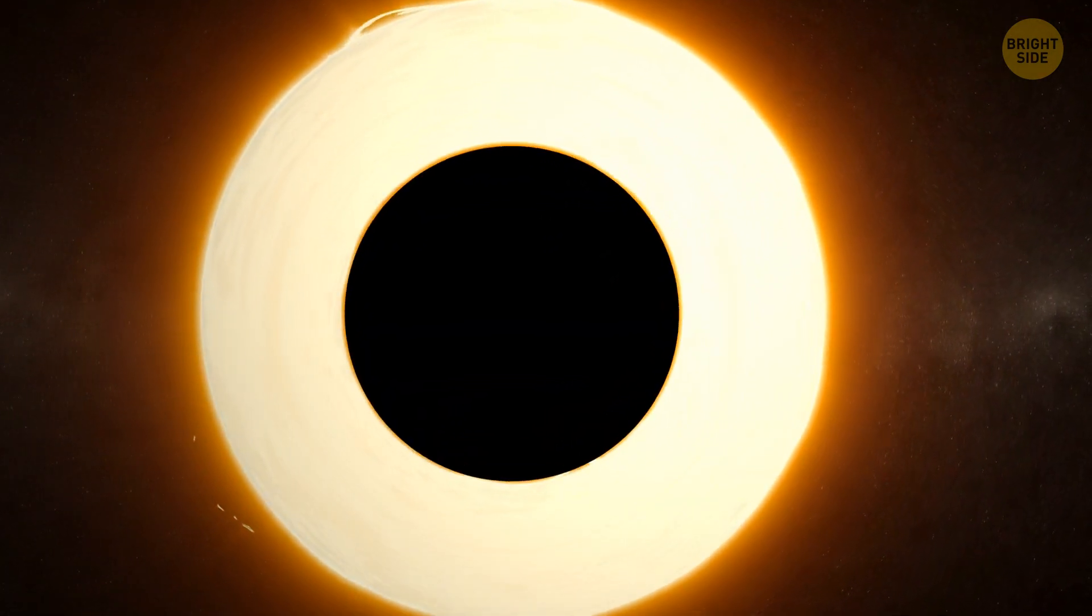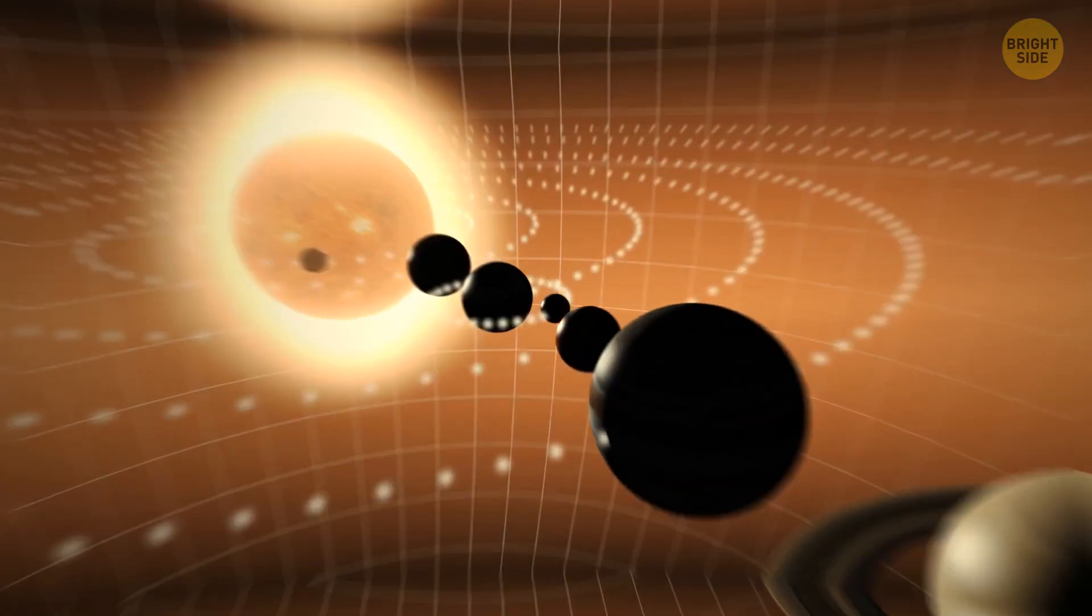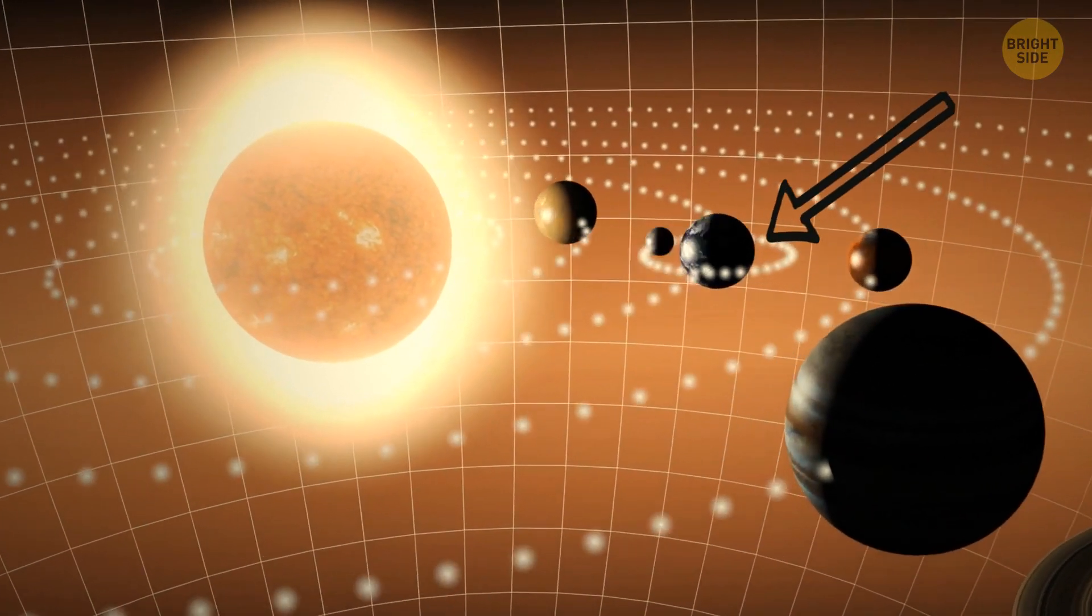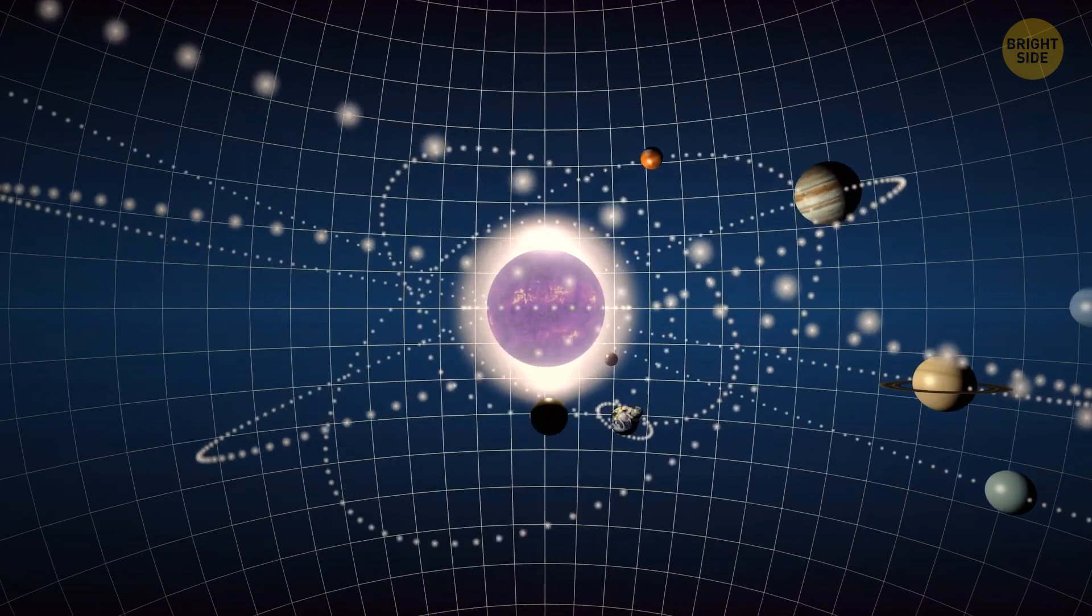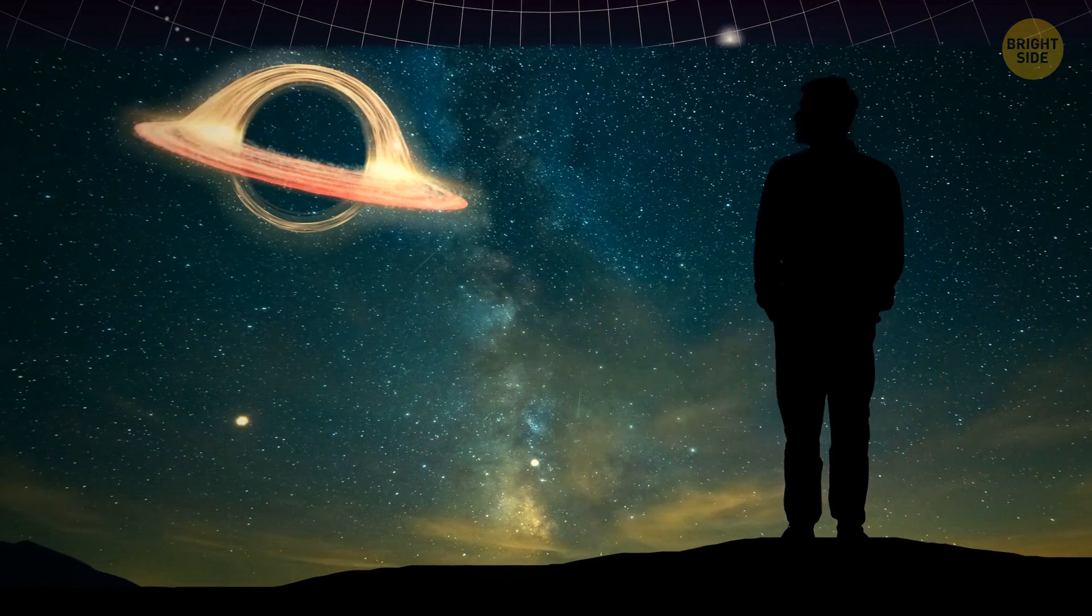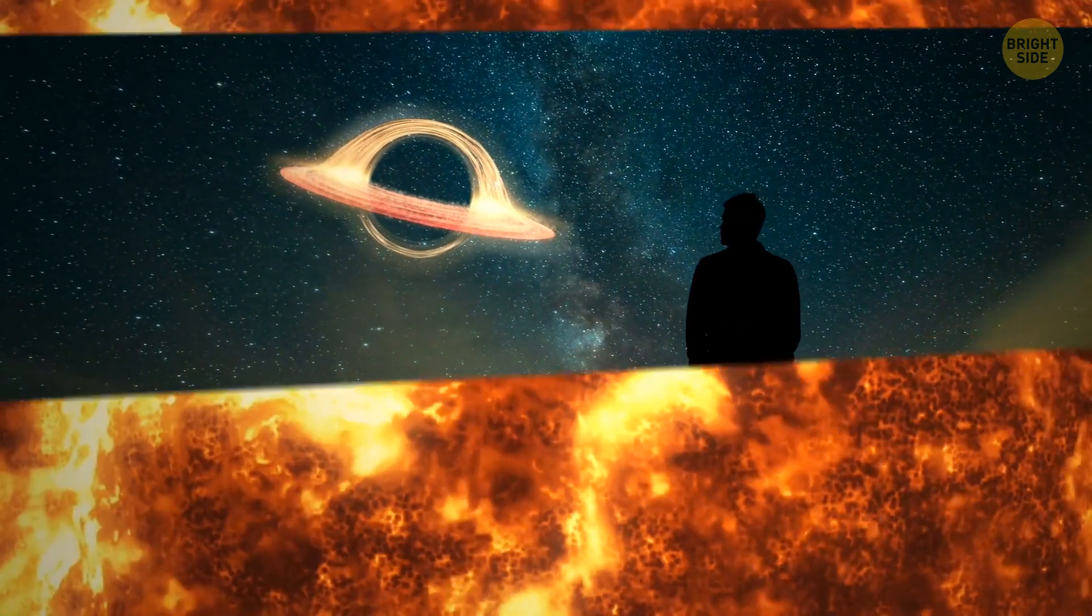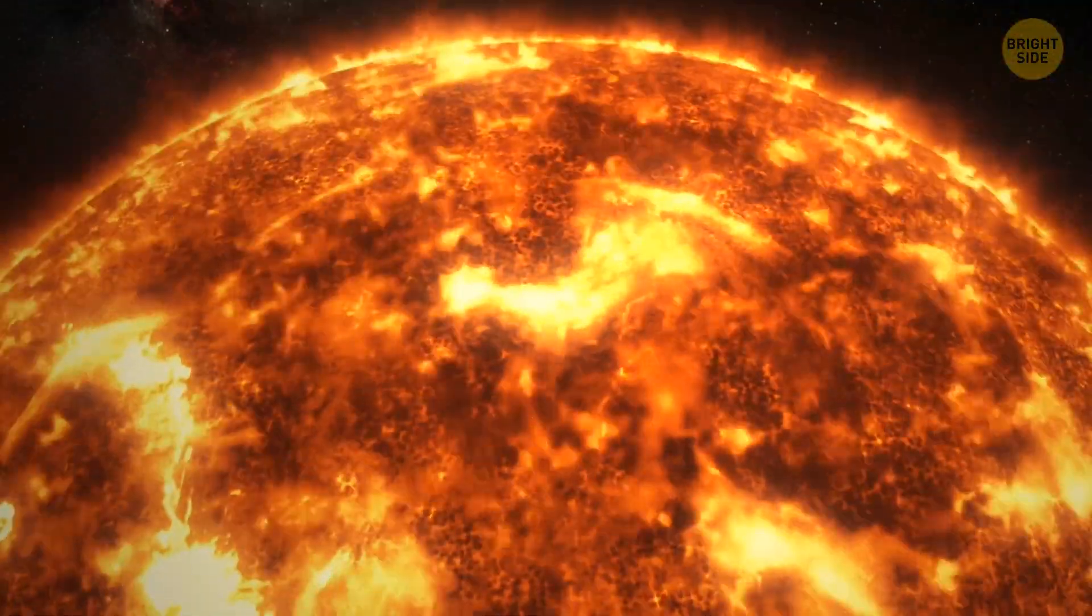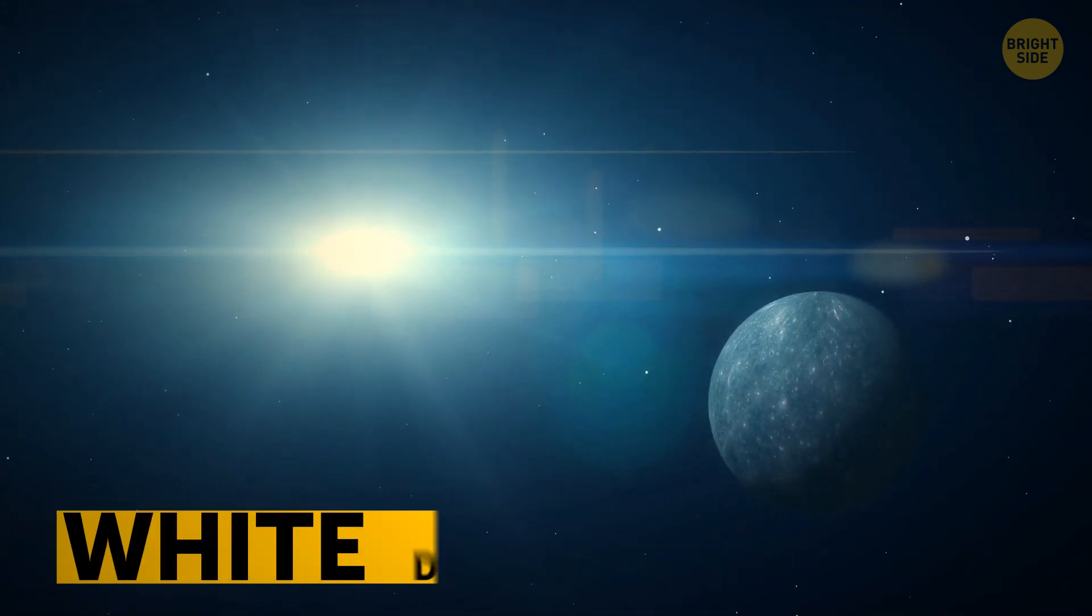If it happened, though, and the former star retained its mass, it would still have the same gravitational power. Earth would still keep going around it and wouldn't get pulled in. Its orbit would also remain as it is. The only huge problem would be the lack of sunlight. In reality, the Sun isn't massive enough for such a transformation and will eventually become a white dwarf.